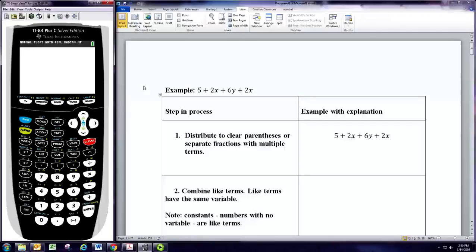Hi, in this video we'll see how to simplify linear algebraic expressions. So the first example we have 5 plus 2x plus 6y plus 2x. This is really just a two-step process.